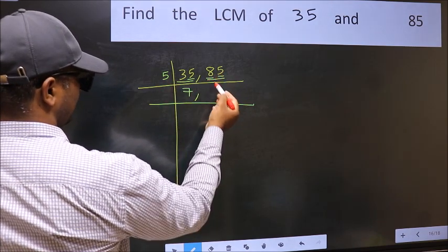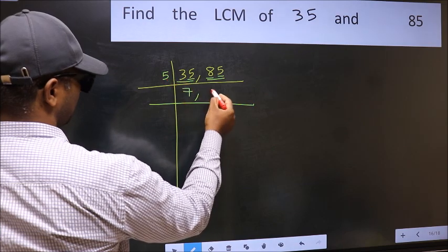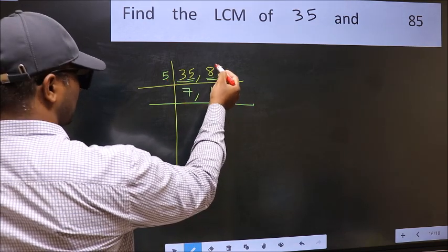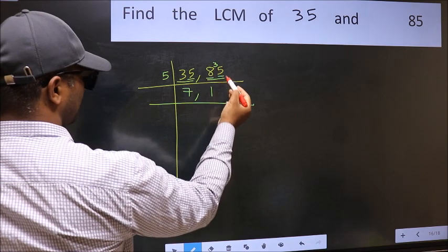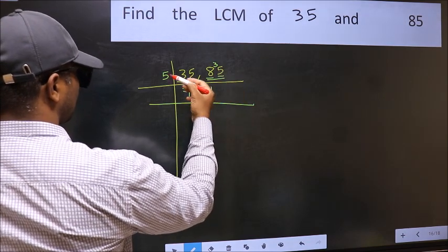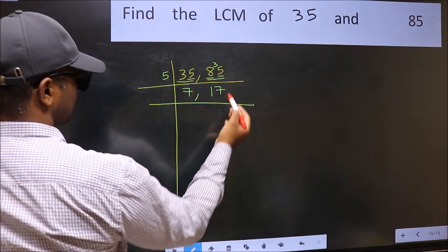First number, 8. A number close to 8 in 5 table is 5, 1 is 5. 8 minus 5, 3. 3 carried forward 35. When do we get 35 in 5 table? 5, 7 is 35.